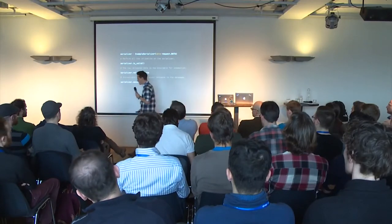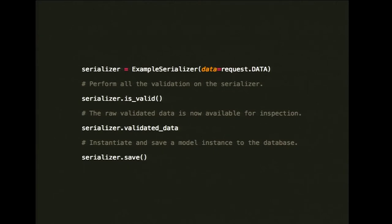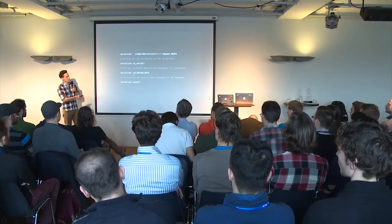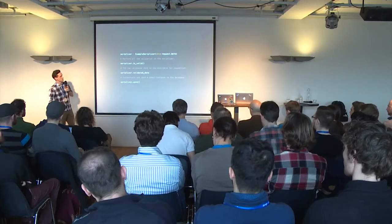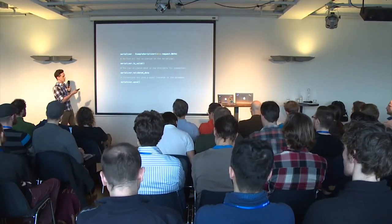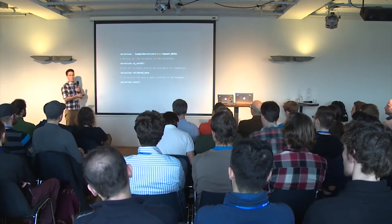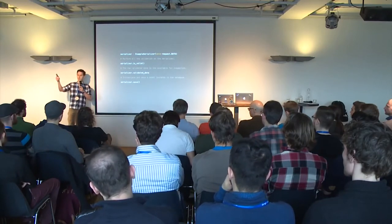3.0 changes that. We still have is_valid and we still have save. But when we call is_valid, all the validation that occurs happens on the serializer itself — we're not instantiating a model instance. Instead, all we're doing is ending up with a bunch of validated primitive data. We're still running the same set of validation rules, just all happening on the serializer itself. Once we've called is_valid, we just have this validated data that we can inspect. And when we're all happy, we can call save, passing in some keyword arguments if we want to prod a few additional bits into the instance being created.